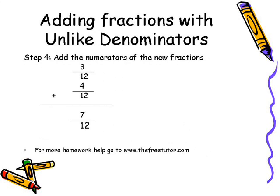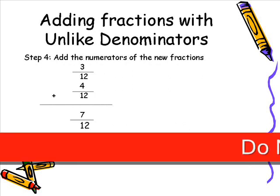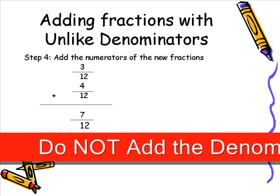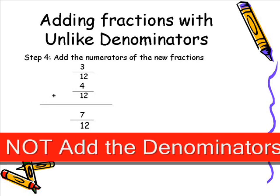Which brings us to Step 4: we add the numerators. 3/12 plus 4/12 equals 7/12.